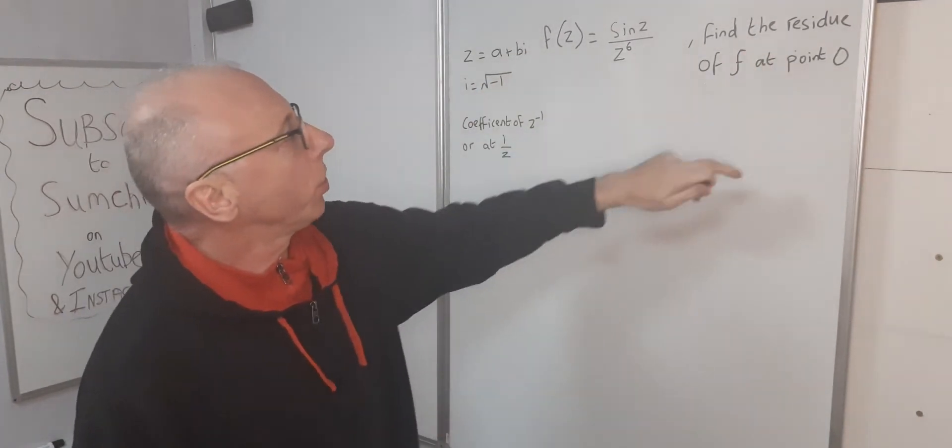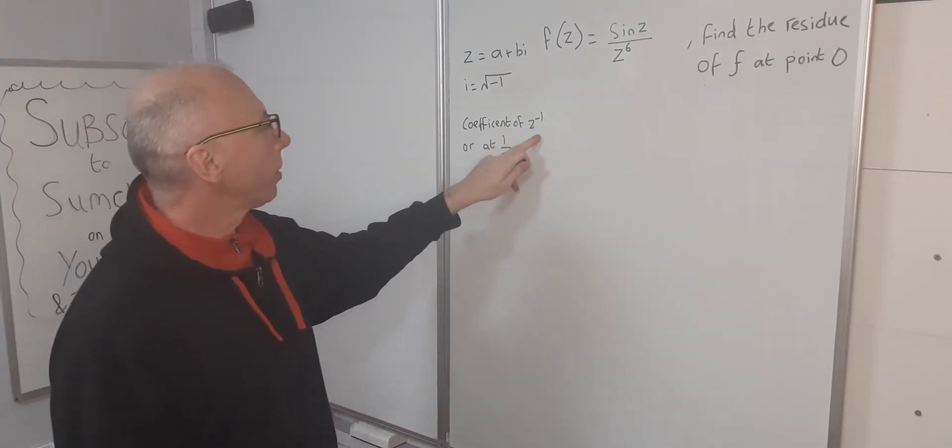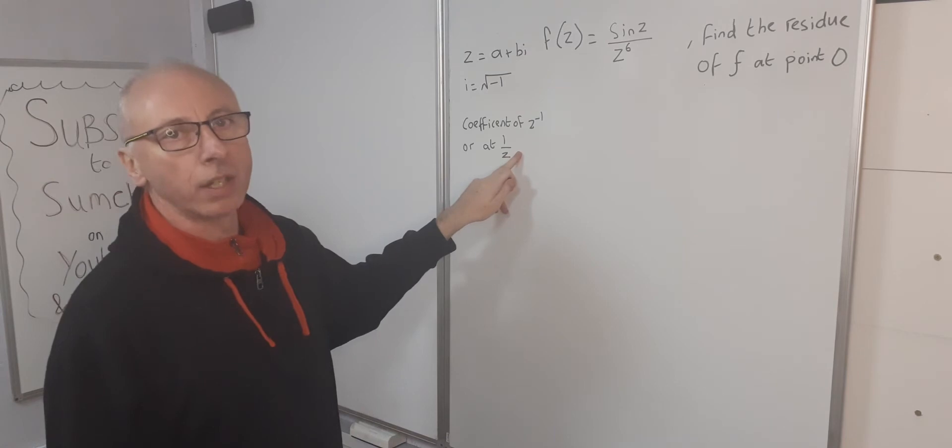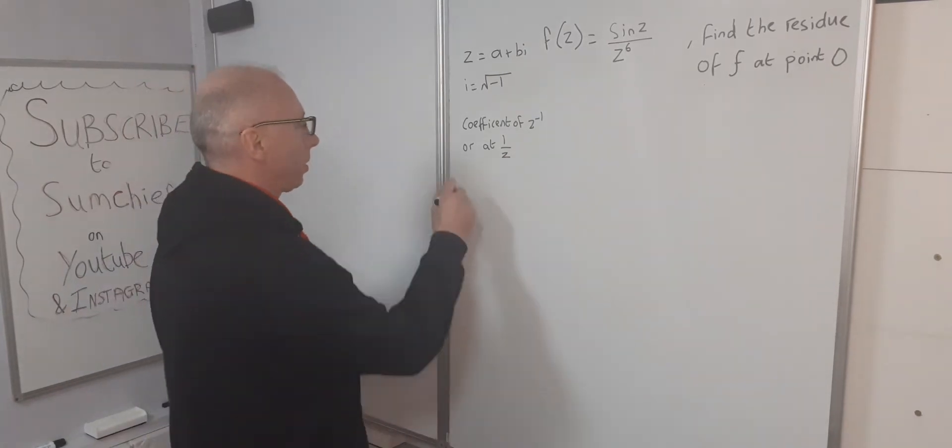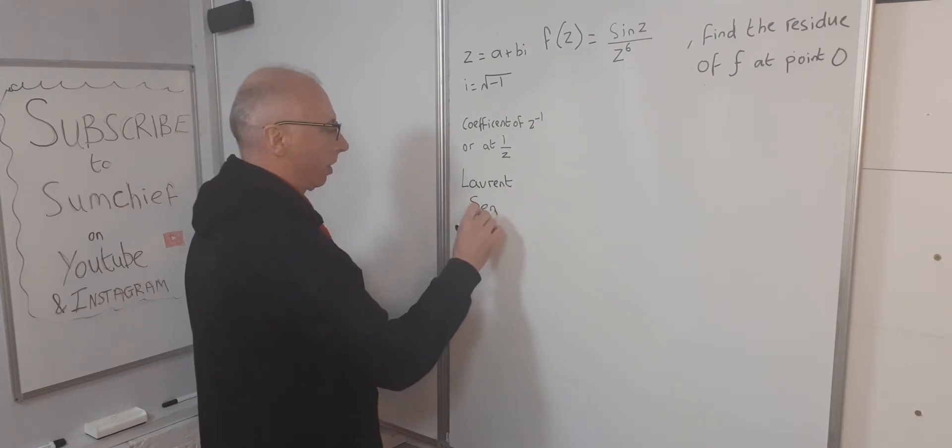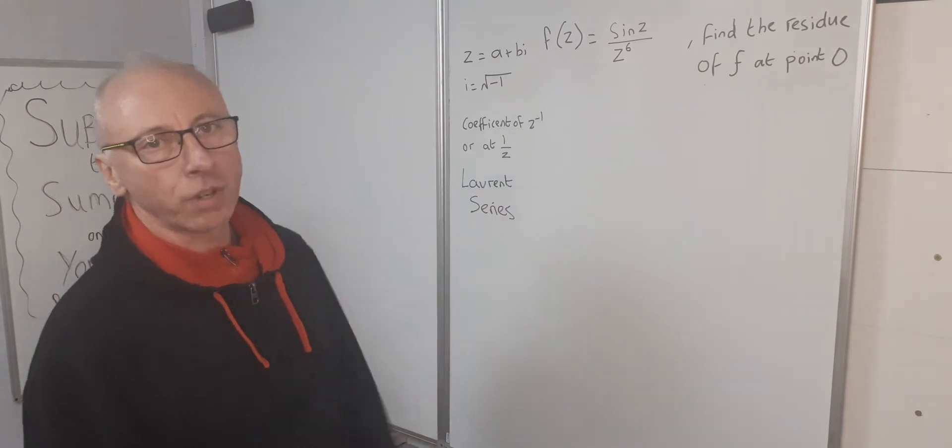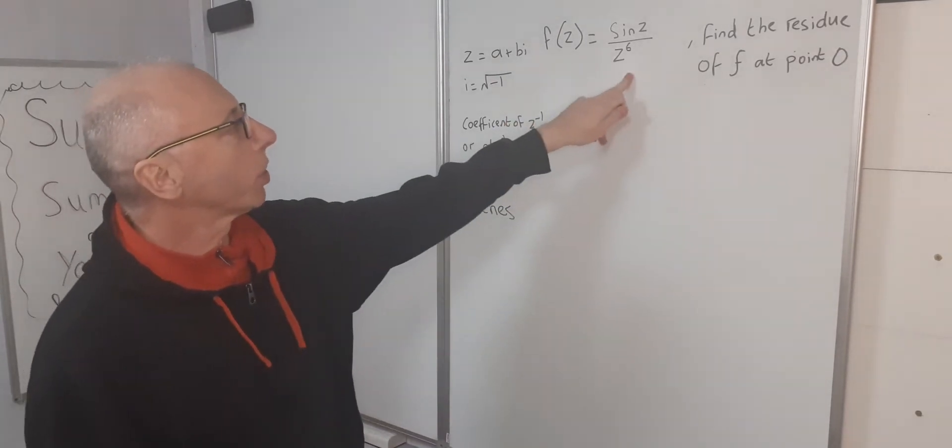To find the residue of this function we need to find the coefficient z to the minus one, or one over z, of the Laurent series. Let's get straight into finding the Laurent series for this function here.